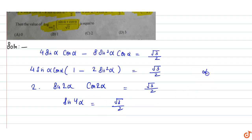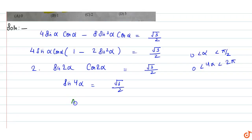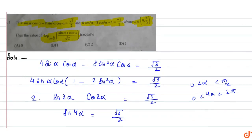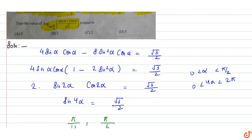तो अगर α की value 0 से π/2 है, तो 4α की value 0 से 2π तक होगी। π/12 पे और π/6 पे value आएगी। अब हम इस equation में satisfy करेंगे कि कौन सा alpha value satisfy कर रही है।